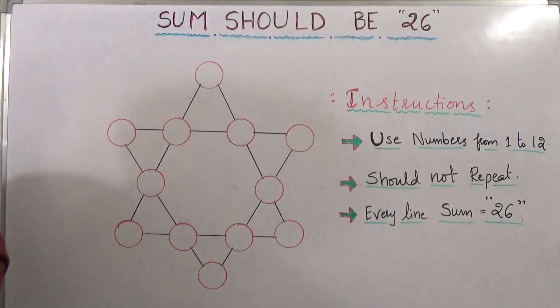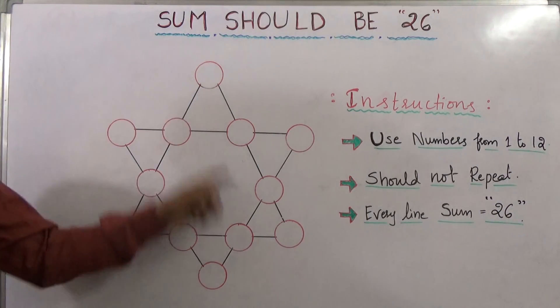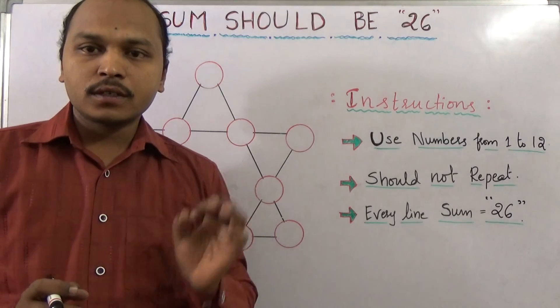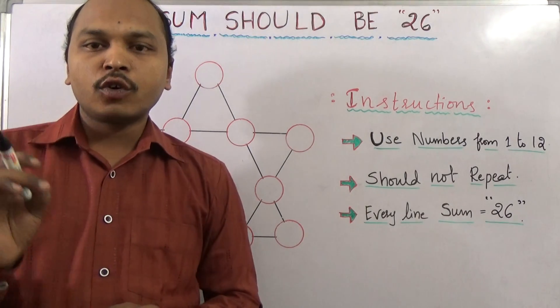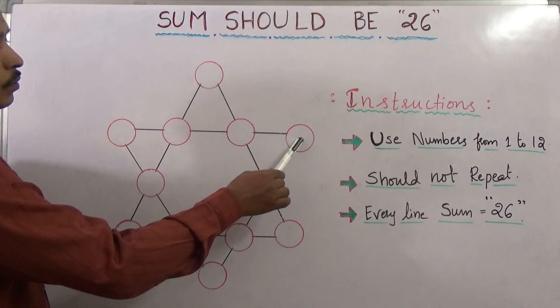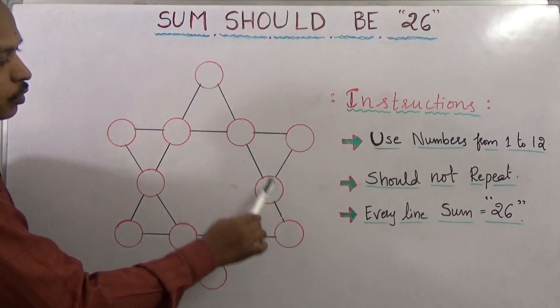If you observe here carefully: one, two, three, four, five, six - total we have six rows. In every row, if we observe, there are four circles. In this row: one, two, three, four. In this row also: one, two, three, four.